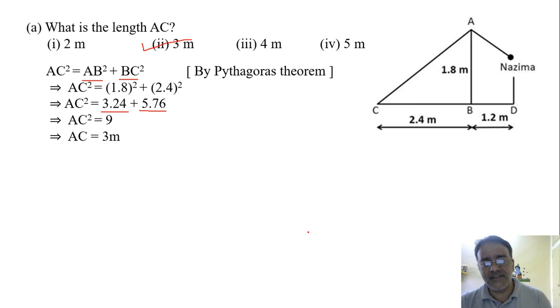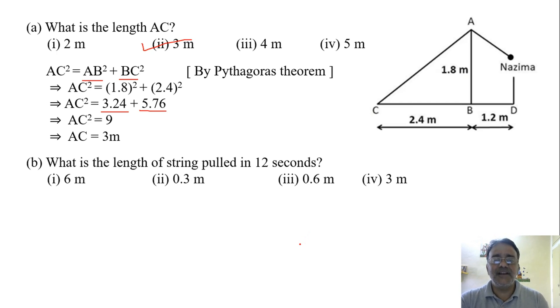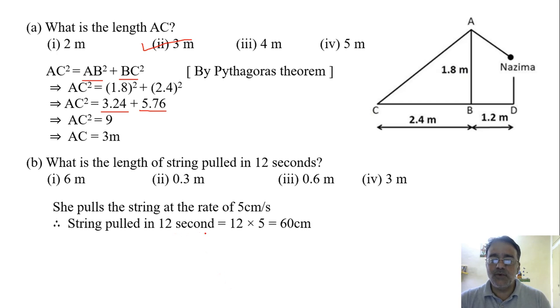Now we'll move toward the next question. What is the length of string pulled in 12 seconds? We know that distance equals speed into time. The speed is given in the question as 5 centimeter per second and the time is 12 seconds. So the string pulled in 12 seconds is 12 × 5, that is equal to 60 centimeter. We have to write in meter, so we divide it by 100.